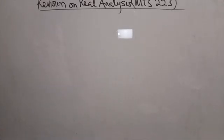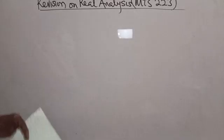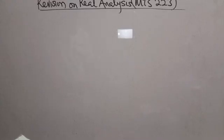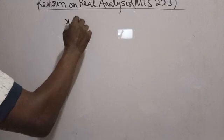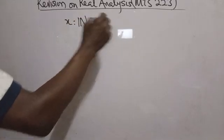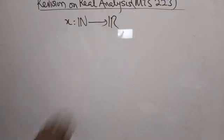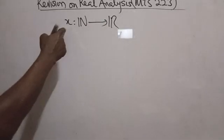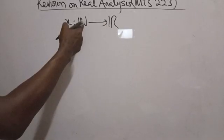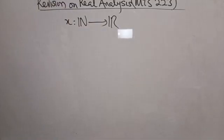It's just like a sequence. What is a sequence? A sequence is a function that has the domain of natural numbers. If I'm talking about a sequence of real numbers, I would say, for example, let x be a sequence with natural numbers as the domain and R as the real numbers. So a sequence of real numbers is a function that shows the correspondence between natural numbers and real numbers.